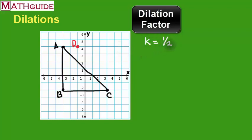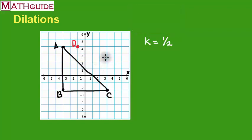So if we have a dilation factor of a half and this is our center of dilation, I'm going to show you exactly how to do this problem. The first thing we have to do is measure some distances. So A is a point here, and it's two units away from our center of dilation. What we want to do is take half that distance, so half of two is one. I'm going to go one unit in the same direction of A. Let's do that in blue.